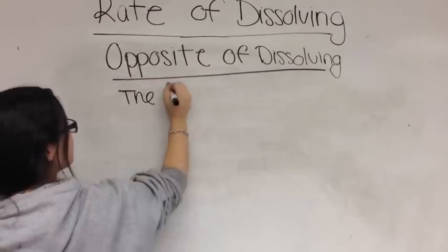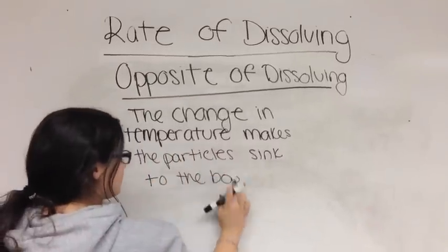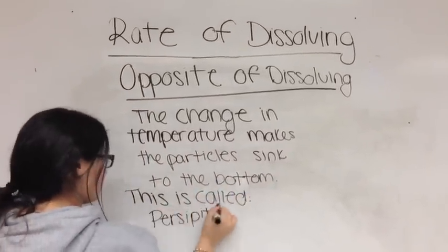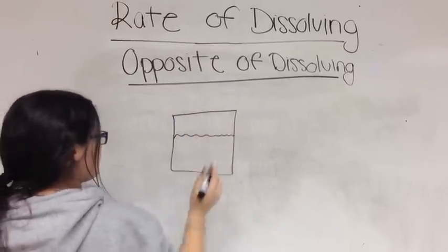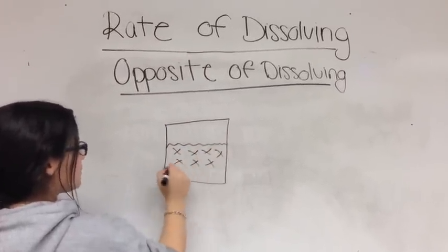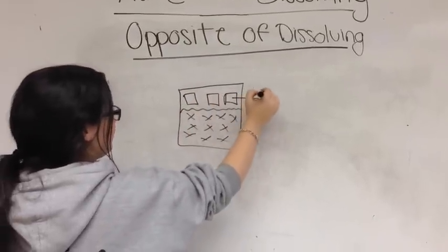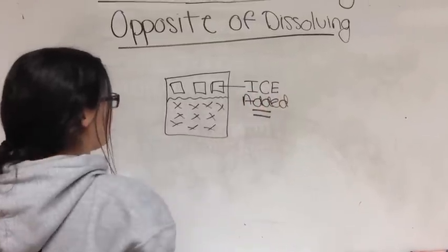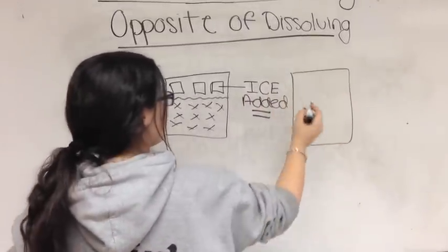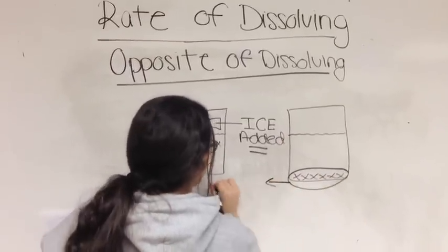The opposite of dissolving. The change in temperature makes the particles sink to the bottom. This is called precipitation. Here, Dani draws a container. The X's represent particles. Then she adds three ice cubes. This makes the particles sink to the bottom. This creates the precipitate.